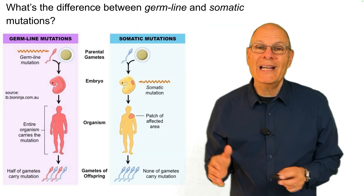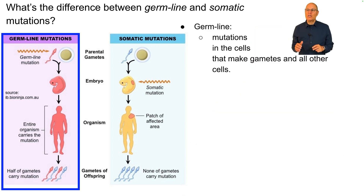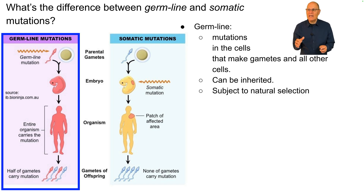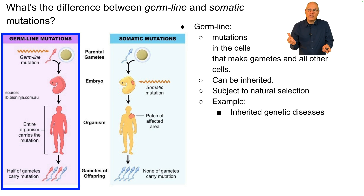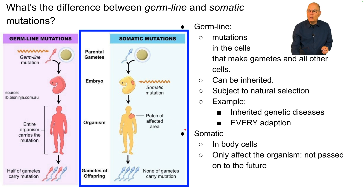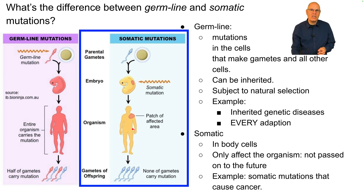What's the difference between germline and somatic mutations? Germline mutations are mutations in the cells that make gametes and all other cells. If there were a mutation in a sperm or egg, that mutation would be present in every cell in the embryo — and in every cell in the resulting organism, and in the gametes that organism produces. Germline mutations can be inherited and are subject to natural selection. Examples include any inherited genetic disease such as sickle cell anemia, or every adaptation. A somatic mutation emerges in some tissue during development or adult life. It only affects the organism and is not passed on — an example are the somatic mutations that can cause cancer.